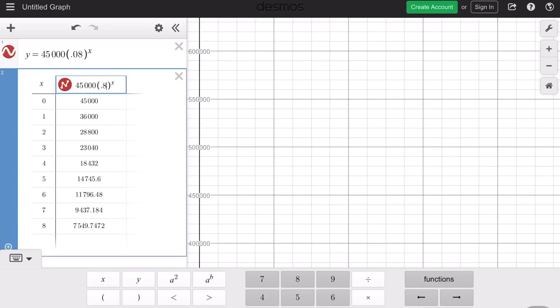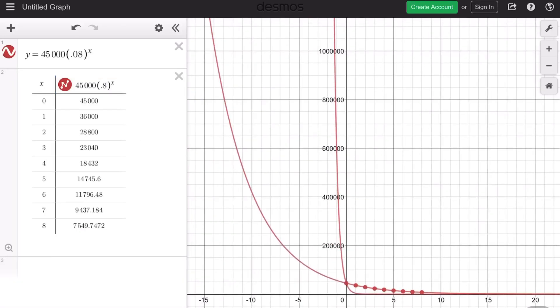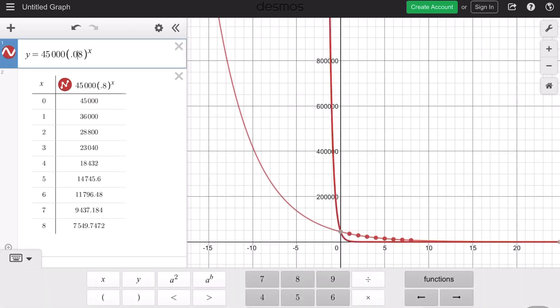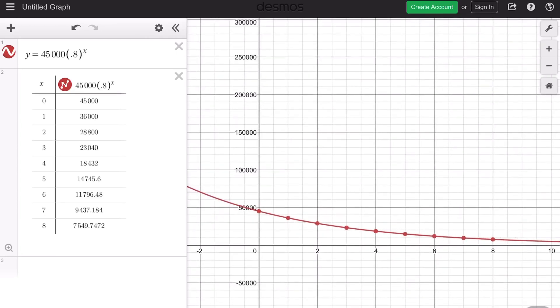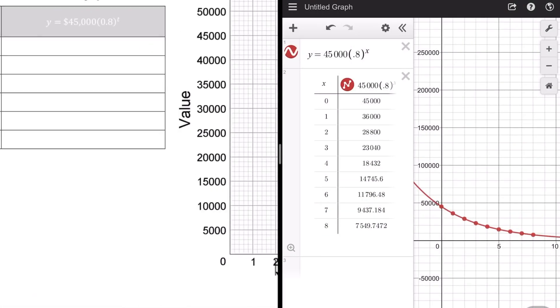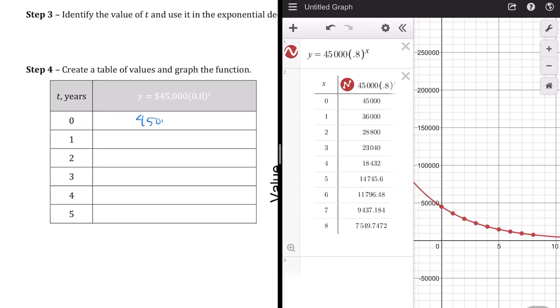So we only want the domain values up to 5. Let's fill this out. So 45,000. The very next year, 20% less is going to be 36,000. The very next year, 20% less is 28,800. After three years, 23,040. After four years, we're at 18,432. After five years, we're at 14,745, and 60 cents. So that's the actual answer to that question here. After four years, that's how much the boat will cost.